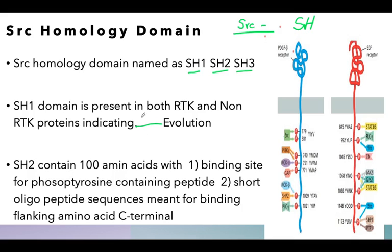The SH2 domain is also a component of the RTK and may be present at different positions depending upon the structural type of receptor tyrosine kinase. It basically contains a 100 amino acid sequence and has two core components. Number one is the binding site of a phosphotyrosine-containing peptide — meaning the receptor tyrosine kinase itself undergoes a structural confirmatory change, which I will elaborate in the next slide.